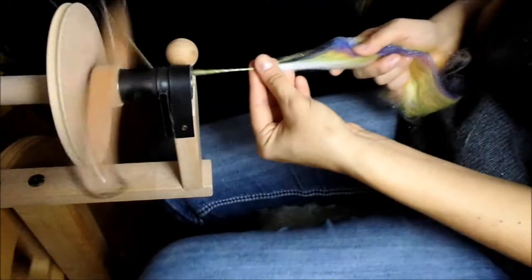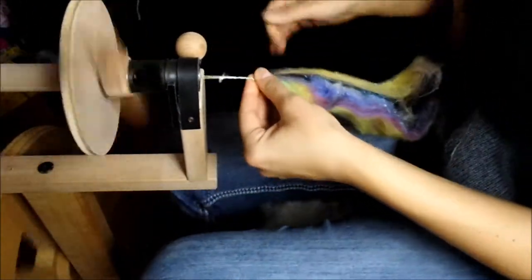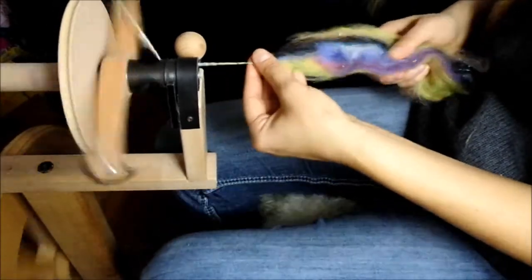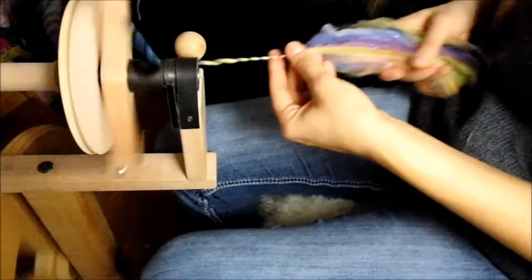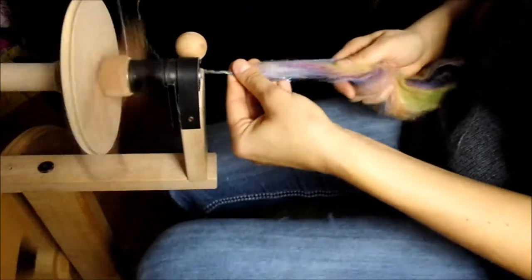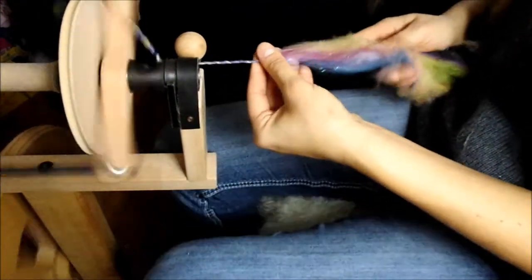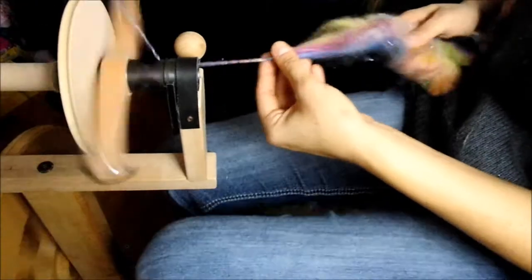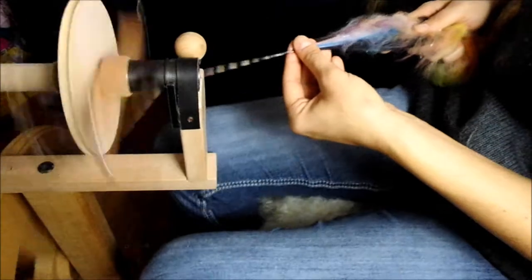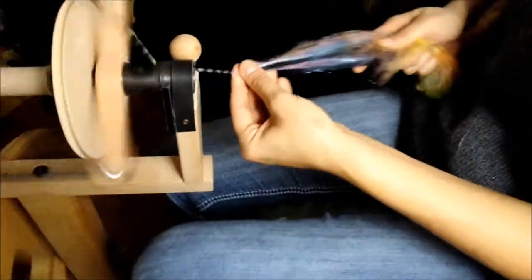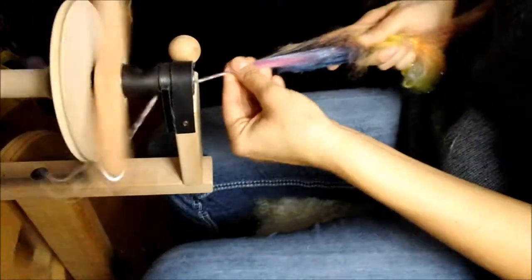Once your hands are warmed up, what you want to do is start spinning your yarn a little bit thicker. What we want is for the yarn to be spun with thicker sections and thinner sections. We don't want the sections to be all the same diameter.